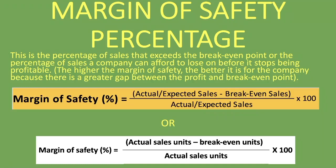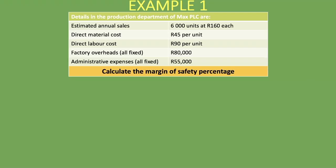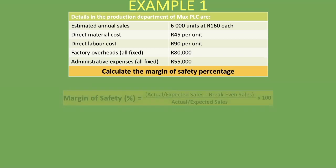Here is the example we're going to work through. We're given details for the production department of Max plc: 6,000 units at 160 rand each. We have direct material, direct labor, factory overheads — which are all fixed — and administrative expenses, which are also all fixed. We're asked to calculate the margin of safety percentage.